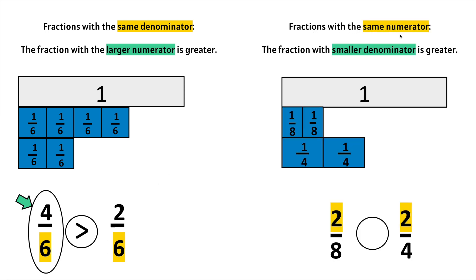Fractions with the same numerator: we notice that 2/8 and 2/4 have the same numerator of 2. The fraction with the smaller denominator, which would be the 4, is greater. Let's see why. 2/8 ... 2/4. We know that 4ths are actually bigger than 8ths. And if we have 2 of each, then we know that 4ths will be bigger.